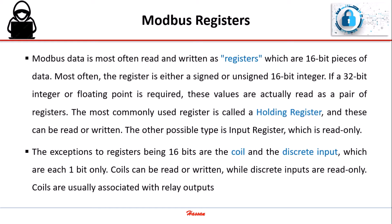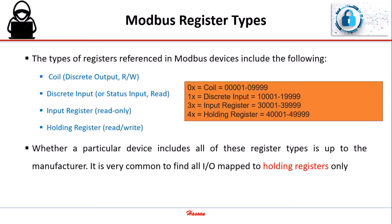Modbus data is most often read and written as registers, which are 16-bit pieces of data. The register is either a signed or unsigned 16-bit integer. If a 32-bit integer or floating point is required, these values are read as a pair of registers. The most commonly used register is called a holding register, and these can be read or written. The other possible type is the input register, which is read only. The exceptions to registers being 16-bits are the coil and the discrete input, which are each one bit only. Coils can be read or written, while discrete inputs are read only. Coils are usually associated with relay outputs. It is very common to find all I/O mapped to holding registers only.